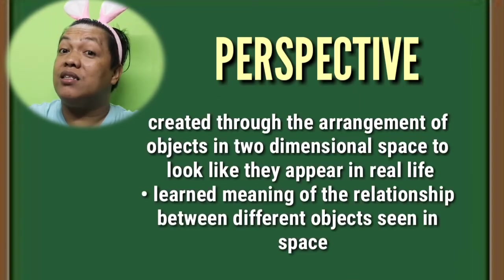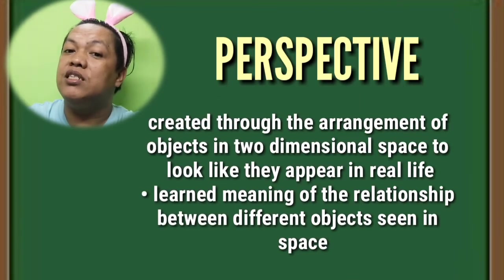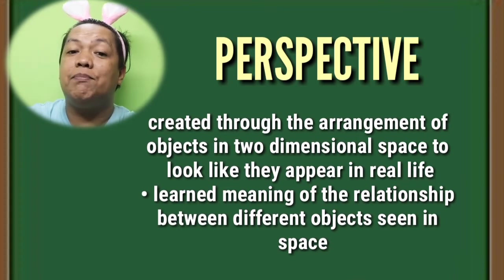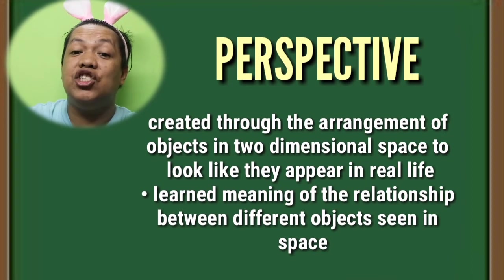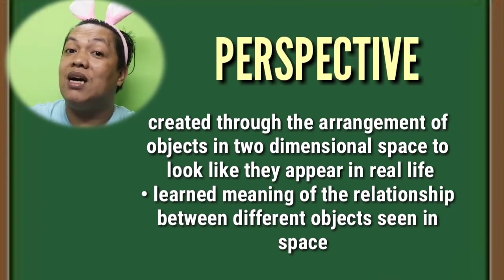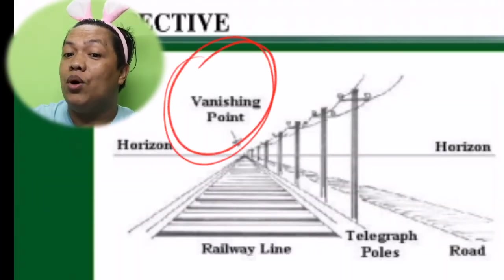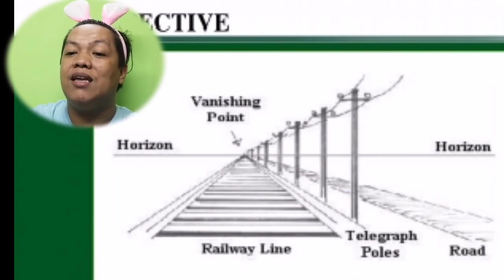Another visual design element is perspective. Perspective is created through the arrangement of objects in two-dimensional space to look as they appear in real life. It also involves the learned meaning of the relationship between different objects seen in space. Examples include a horizon with one vanishing point, a railway line, telegraph poles, a road showing perspective, and a design of buildings and a street.